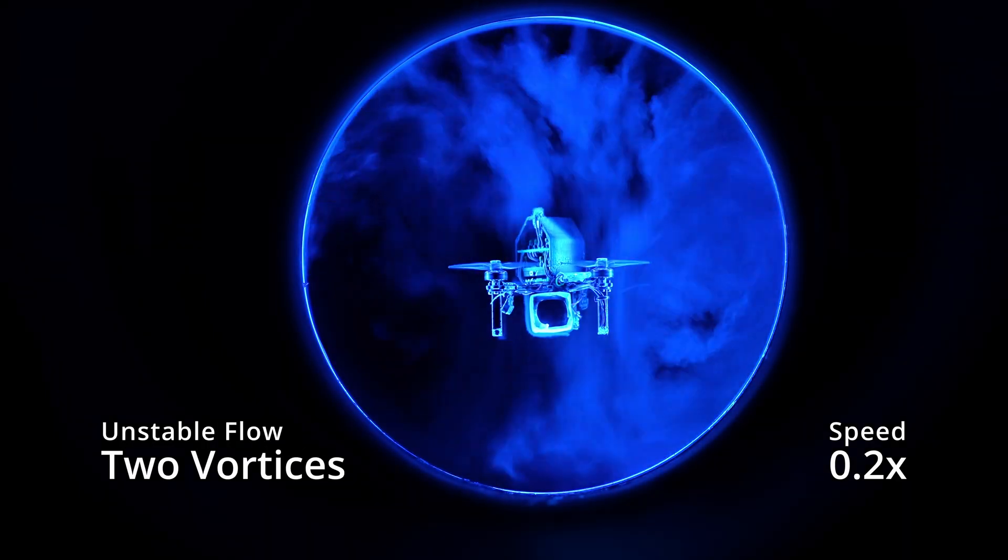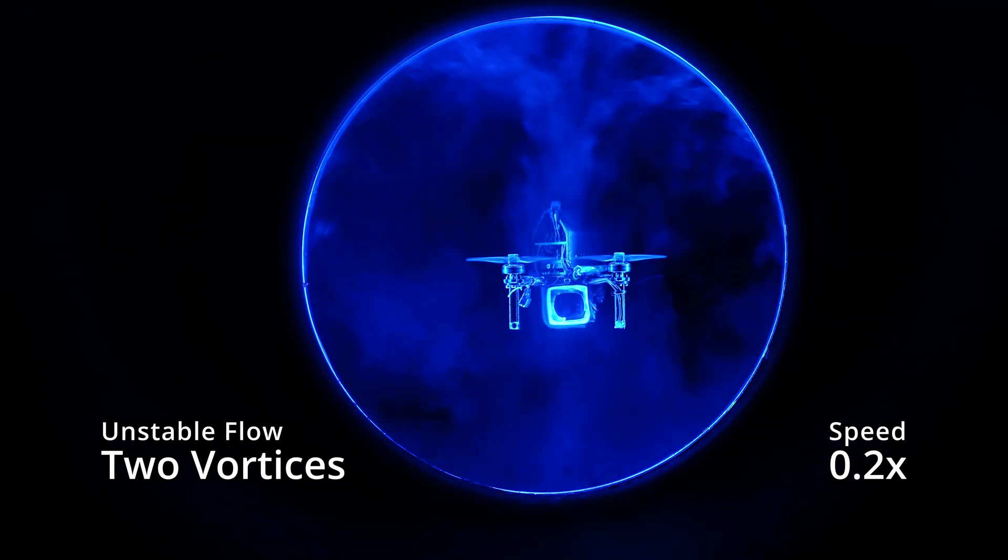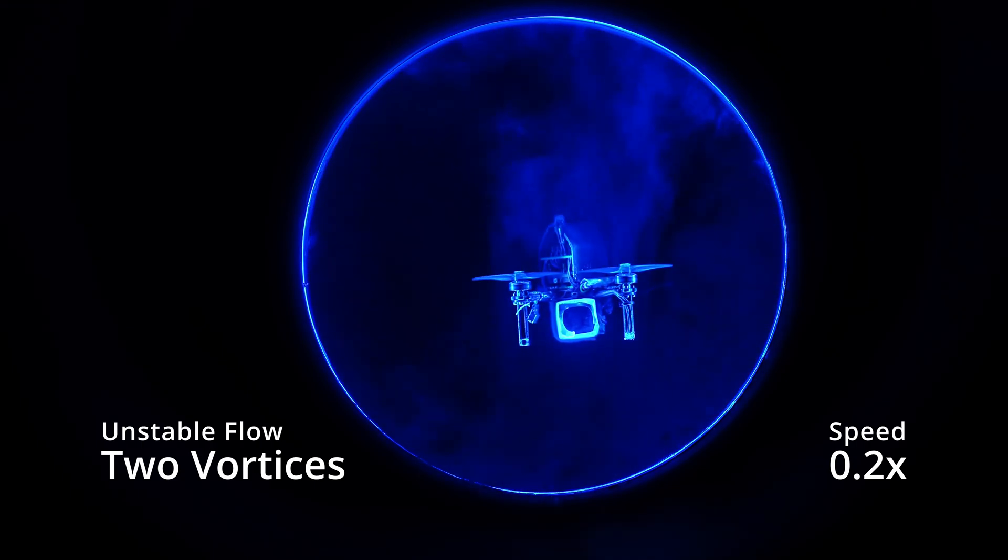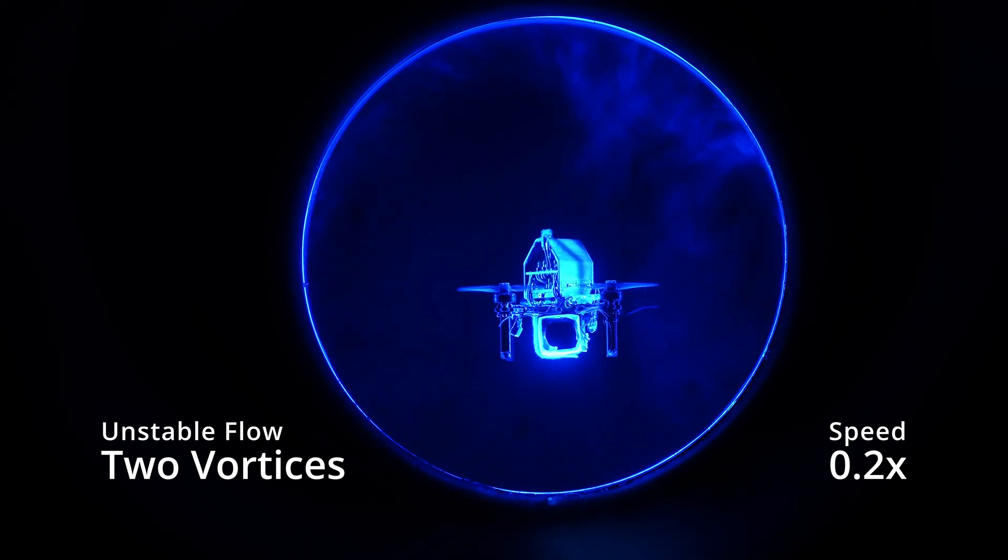If the quadrotor flies in the center, an unstable two-vortex configuration with chaotic behavior develops. This makes controlling the drone much more challenging compared to the circular flow scenarios.